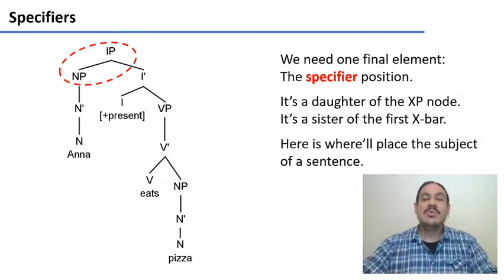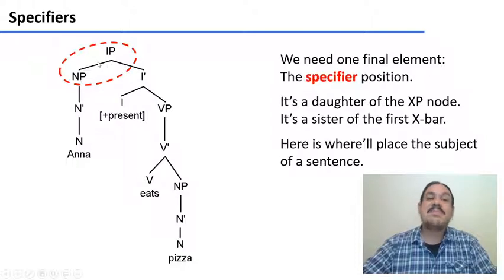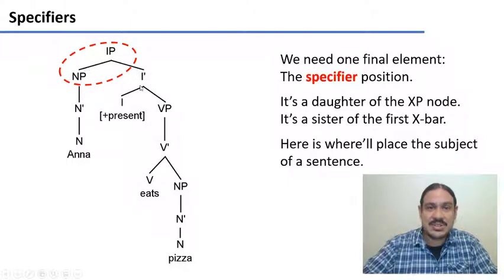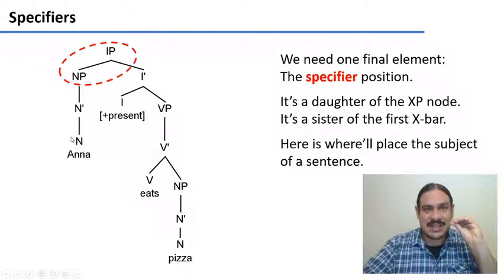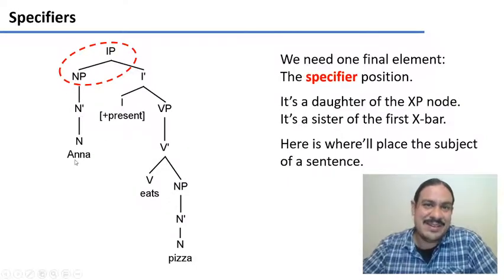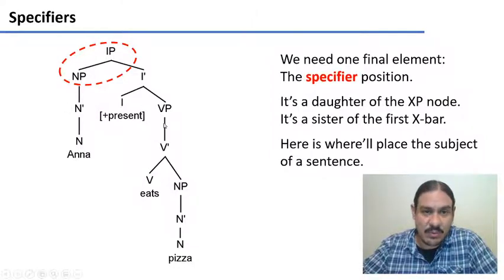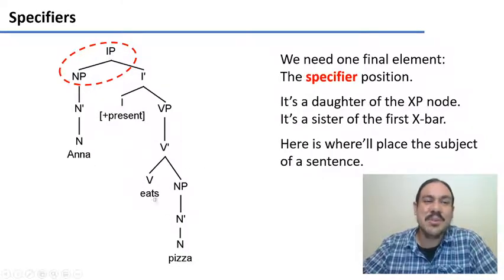Let's add one final bit. We're going to specify another kind of element called the specifier. The specifier is going to be another daughter of the initial node — the XP node — and it is going to be a sister of whichever is the first X-bar. The specifier is where we will place the subject of sentences. So the subject of the sentence 'Anna eats pizza' is the noun phrase 'Anna.' Now we have all the elements for this tree: the subject is in the specifier position, the present inflection is for the verb 'eats,' and 'eats' has a direct object as a complement — the noun 'pizza.'